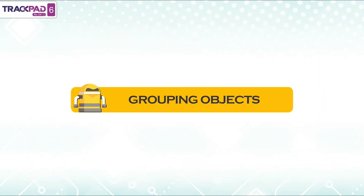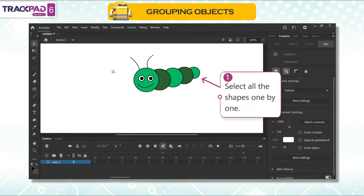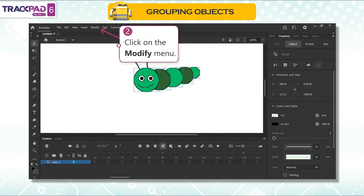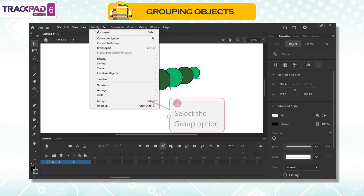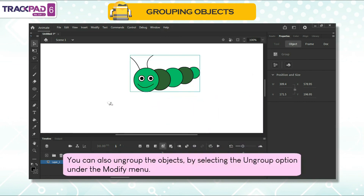Grouping objects: objects can be grouped together to combine different shapes into one. To group the shapes, follow the given steps. First, select all the shapes one by one. Second, click on the modify menu. Third, select the group option. You can also ungroup the objects by selecting the ungroup option under the modify menu.